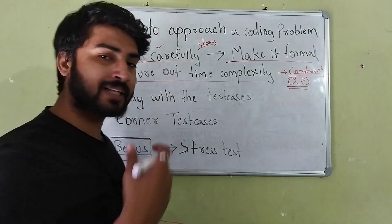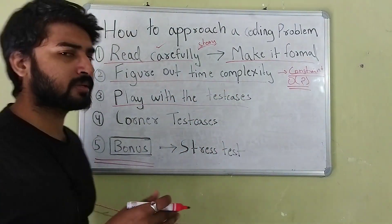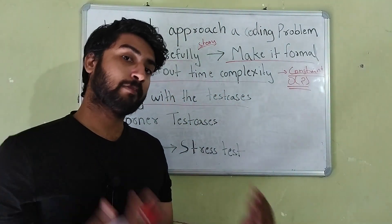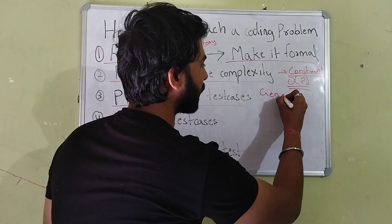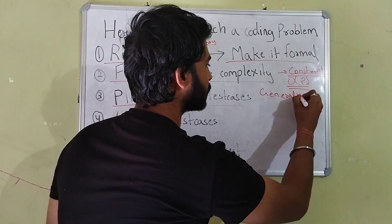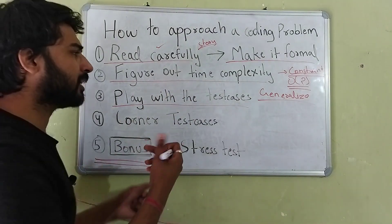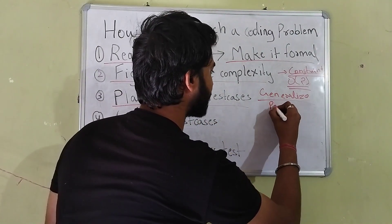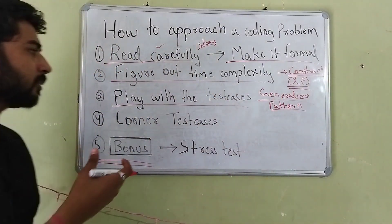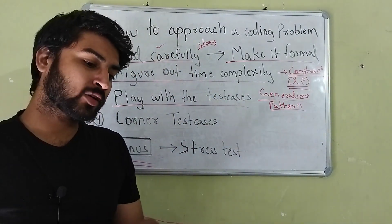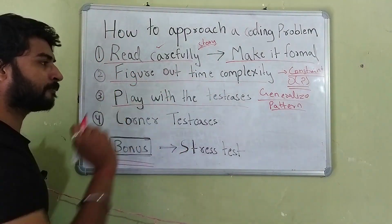After doing those two things, the next step is to play around with the test cases. There are some example test cases given — play around with them and try to generalize. A lot of times, just from the test cases you're able to generalize and get to a solution. Try to find a pattern, see if there's a general output related to the test cases, and from that try to find what algorithm or approach works.